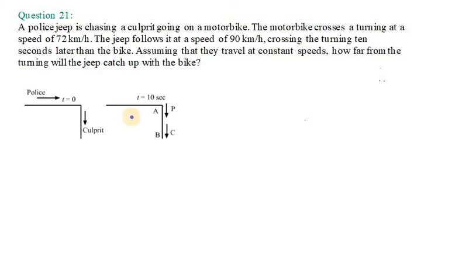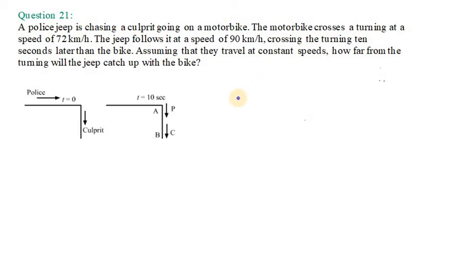Let's start with question number 21. A police jeep is chasing a culprit going on a motorbike. The motorbike crosses a turning at a speed of 72 km per hour. The jeep follows it at a speed of 90 km per hour, crossing the turning 10 seconds later than the bike. Assuming they travel at constant speed, how far from the turning point will the jeep catch up with the bike?